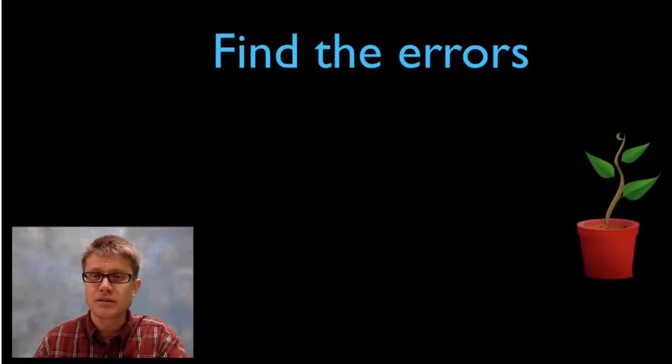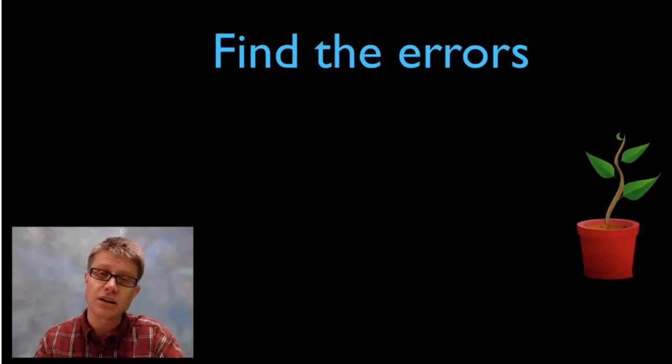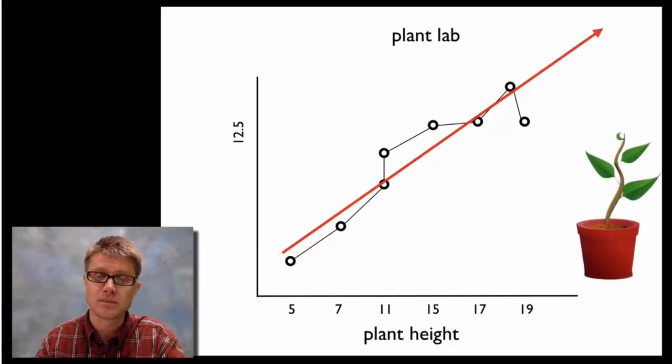So let's look at a bad graph. Let's say I'm collecting data where I'm looking at the amount of fertilizer and how that affects plant growth. And let's say that a student gives you this graph. Can you find all the errors in the graph? I can find at least ten probably. Number one, let's start with a title. So it's got a title but the title isn't very descriptive. The title should show me what's going to be on my x and what's going to be on my y-axis. So like the relationship or the relation of fertilizer to plant height.